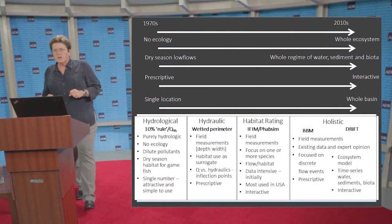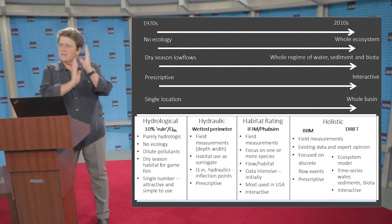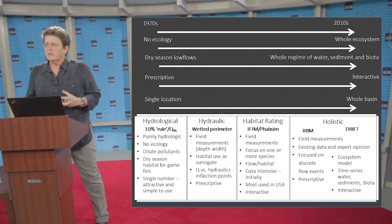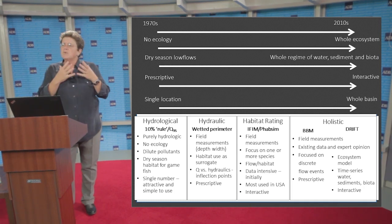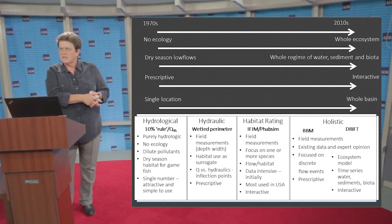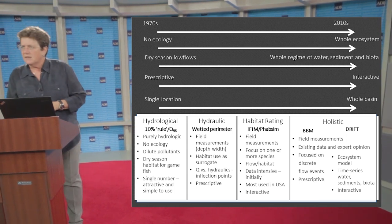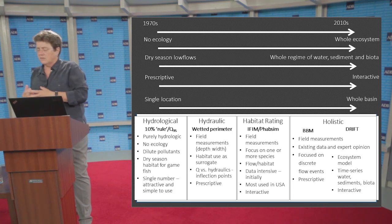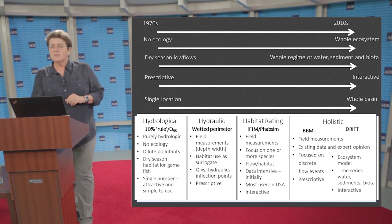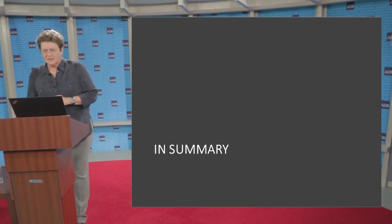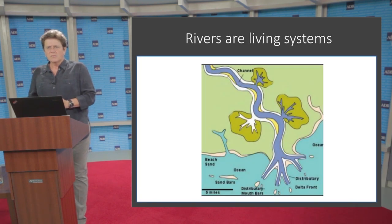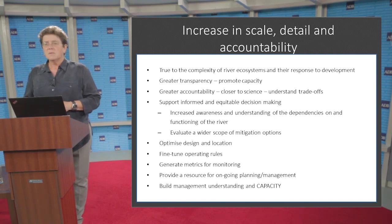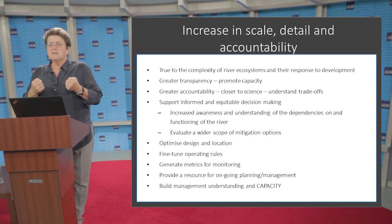In summary, from the 1970s to the 2010s we've seen a growth in the science of environmental flows. We've moved from believing a minimum flow is sufficient to protect an ecosystem, to understanding that we are changing these systems fundamentally — and that we know enough about them to predict how they are likely to respond to our interventions. Rivers are living ecosystems: when you change one part, you change another. The increase in scale, detail, and accountability has driven a corresponding increase in scale, detail, and accountability in environmental flow assessments.